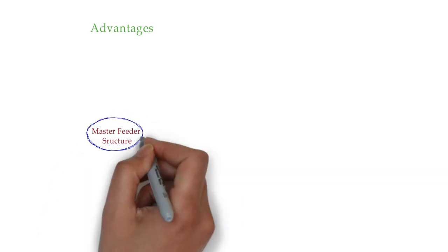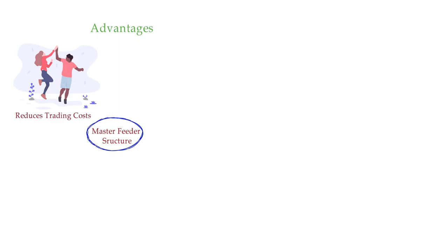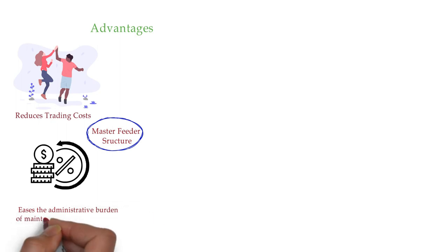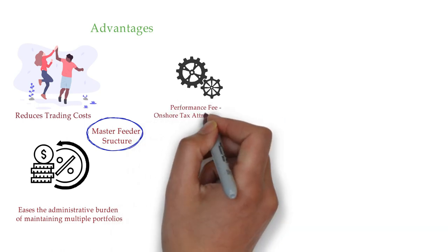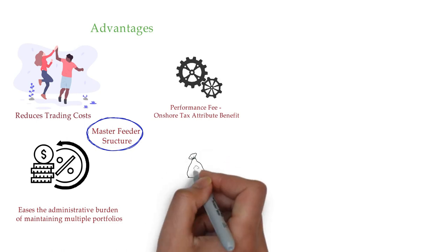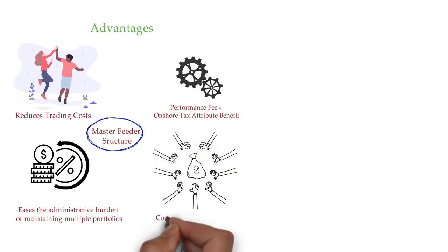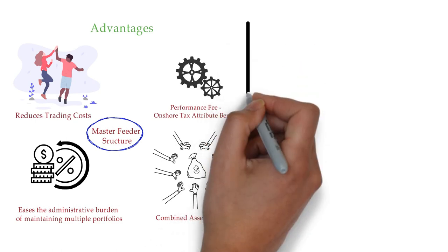A master-feeder fund reduces trading costs because it has no need to split tax lots. A master-feeder structure eases the administrative burden of maintaining multiple portfolios. The master fund general partner's performance fee will be able to maintain the underlying tax attributes from onshore feeders.